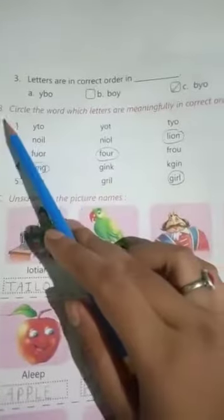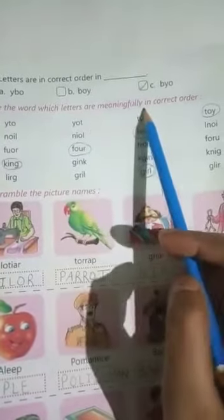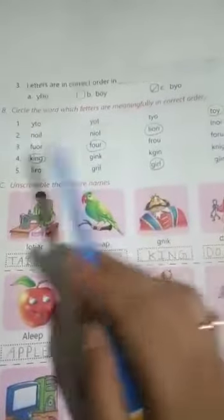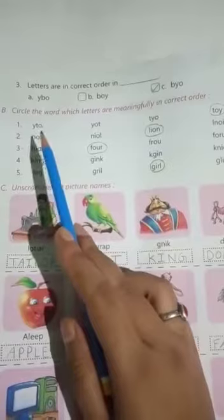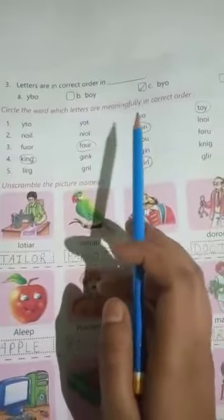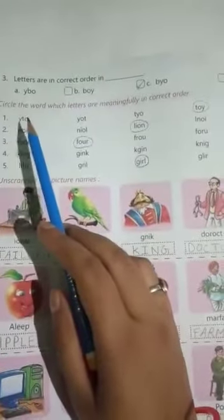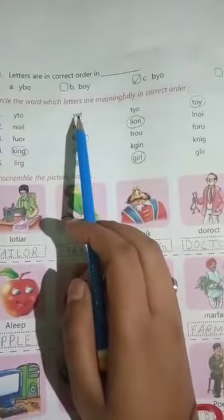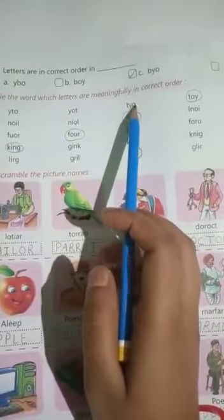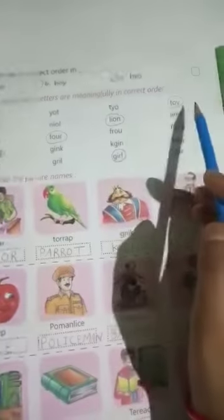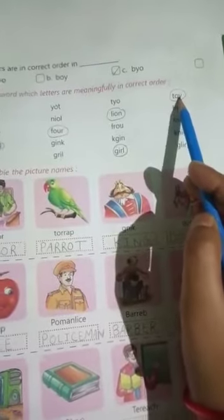Number B, circle the word which letters are meaningfully in correct order. We have to circle the letters in correct order: Y-T-O, Y-O-T, T-Y-O, T-O-Y. Number one has no meaning, these have no meaning. T-O-Y, we will circle this.